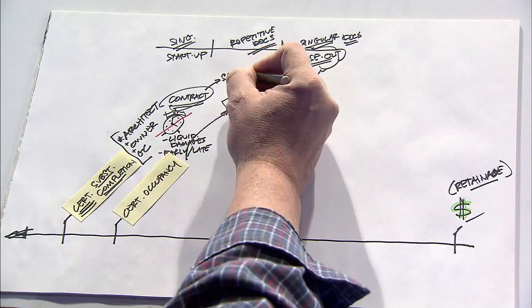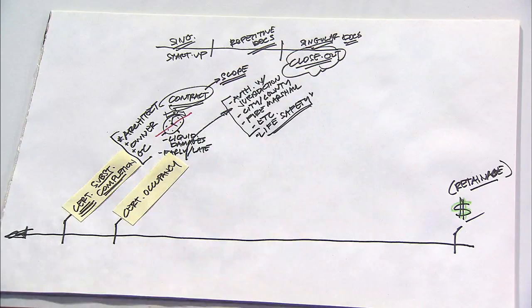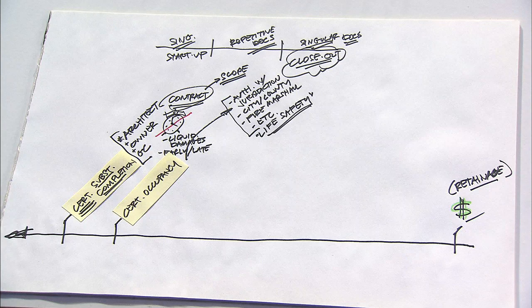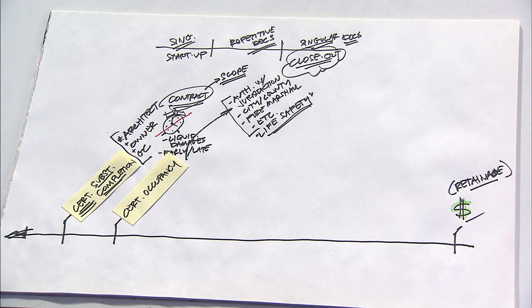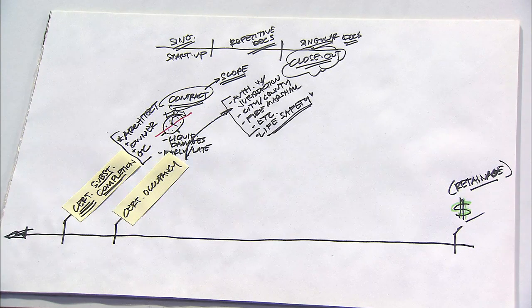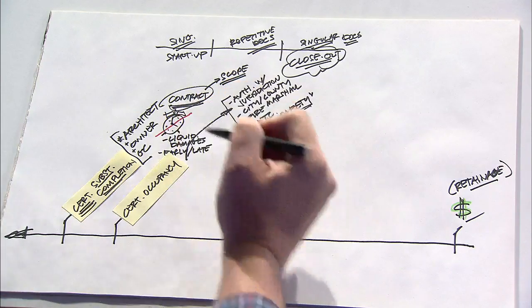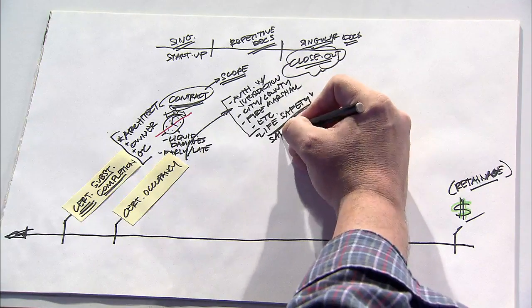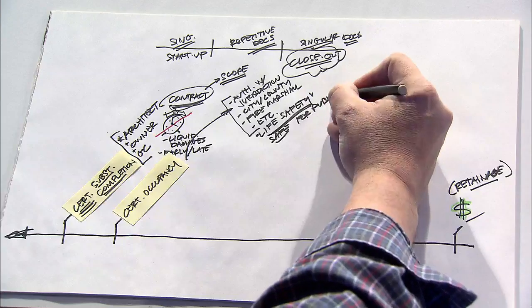Said another way, the contract has a prescribed scope of work. There was a certain type of brick required, there was a certain color of paint required, and so forth. And all of those things would have to be completed correctly as part of the contract. But the Certificate of Occupancy doesn't have anything to do with whether or not the contract scope was met, but rather whether or not the building is safe for the public to occupy.